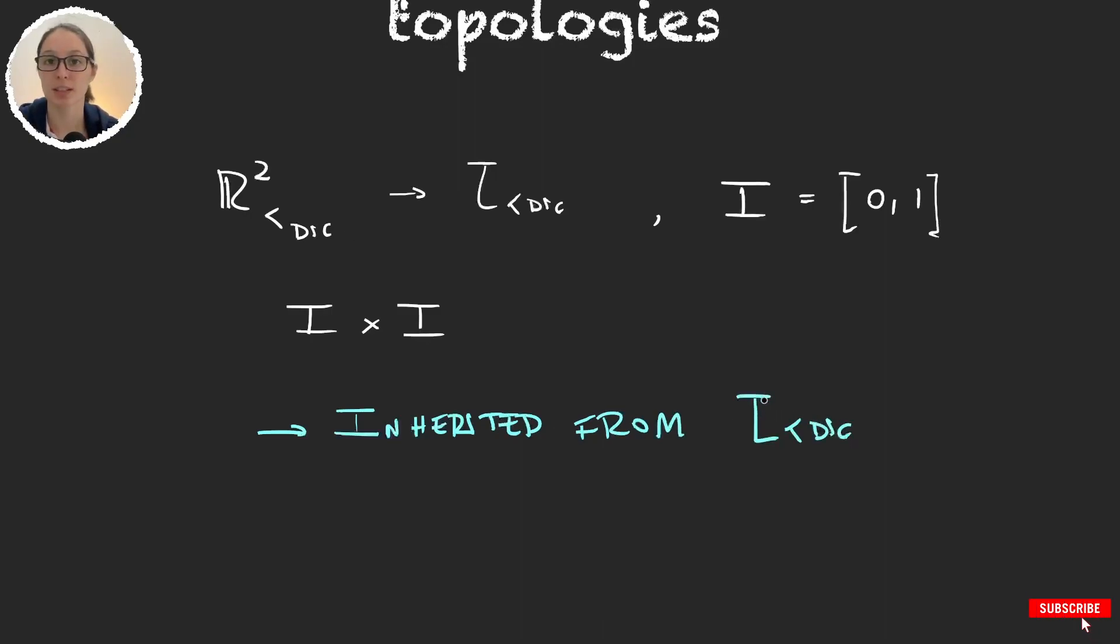That is, we can take any open interval in the dictionary order and intersect it with I times I. And the other topology that we can think of is the topology of the dictionary order restricted to the unit squared. So are these two topologies the same? Let's make a drawing to see that they are not.